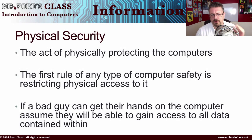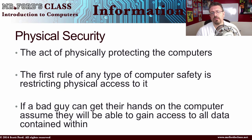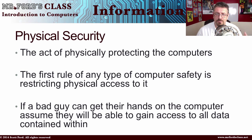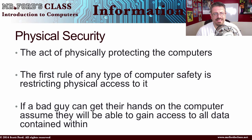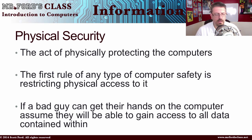First, physical security. This is the act of physically protecting your computer, and the first rule of any type of computer safety is restricting physical access to it. You only want people who are supposed to have access to the computer to have access to it. One of the interesting things about computers is that you can bypass pretty much any security method if you can get your hands on it.